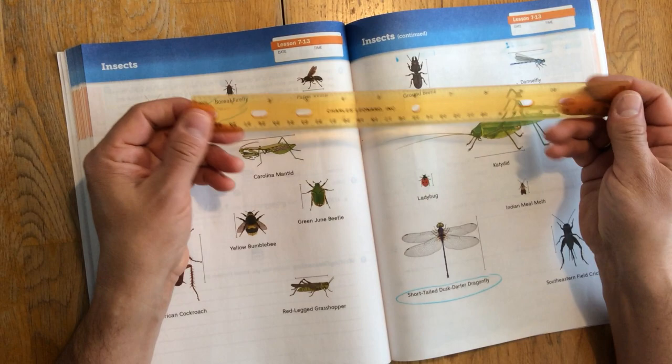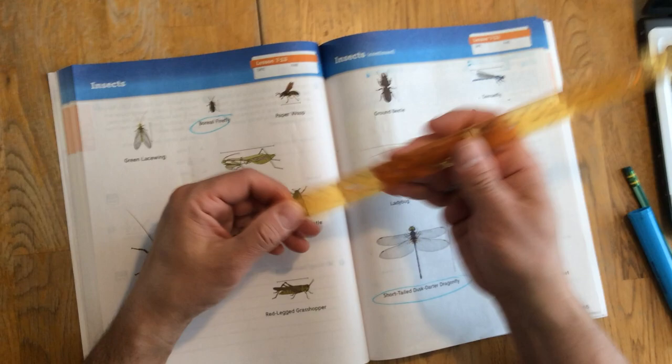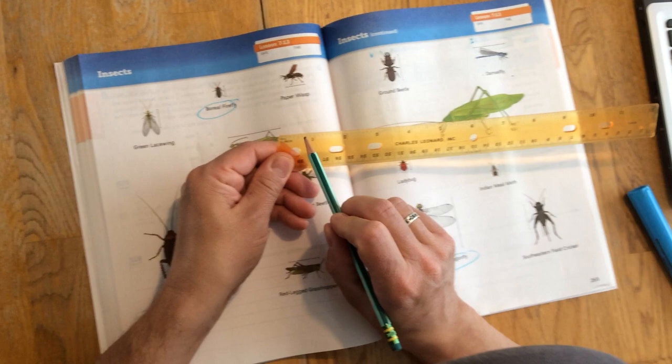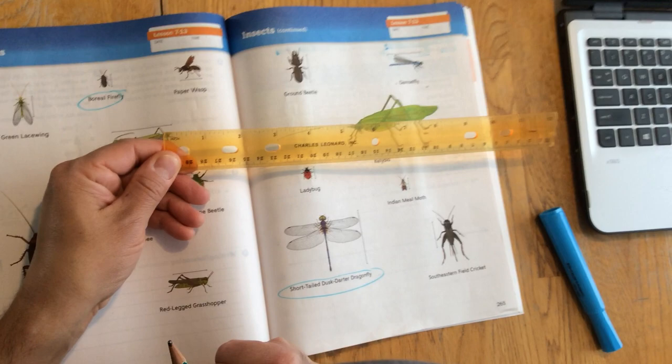We're going to be using the inches side, and as you can tell, each inch is broken up into smaller parts. These little hash marks give us fractional pieces of an inch. So we're going to be measuring to the nearest eighth of an inch.